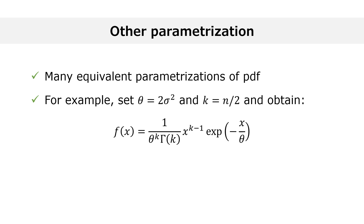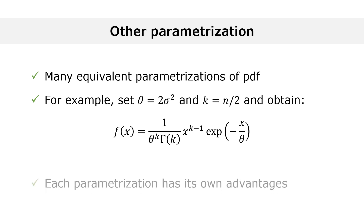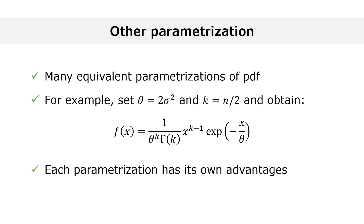Or you can make the substitution h equals n times sigma-squared, which gives the parametrization presented on statlect. All of these parametrizations are useful and each has its own advantages. For example, the parametrization proposed on statlect is often used in Bayesian statistics because it simplifies calculations.